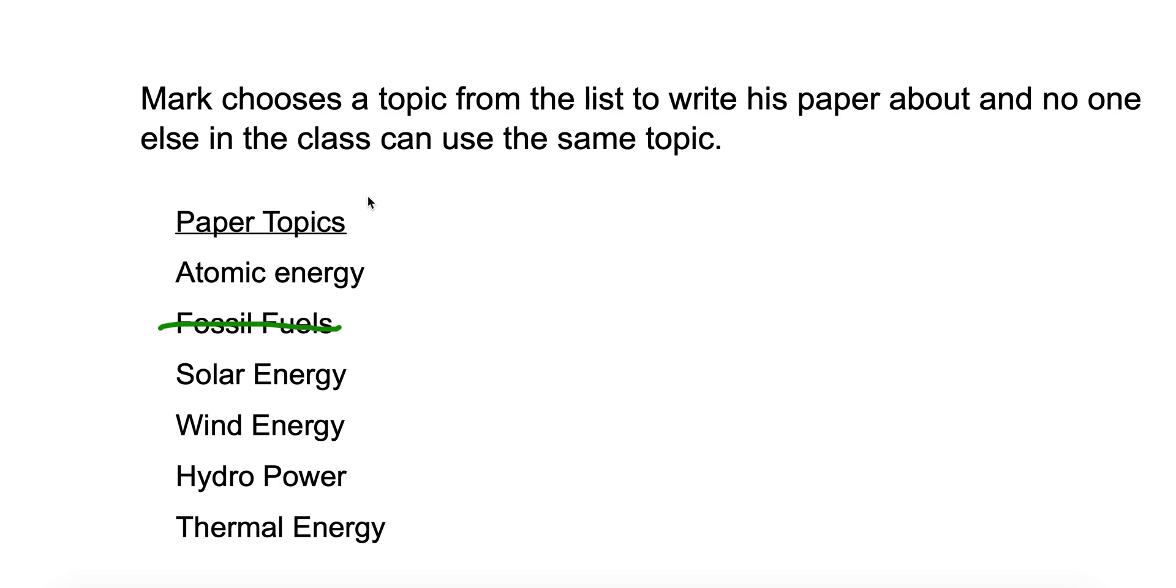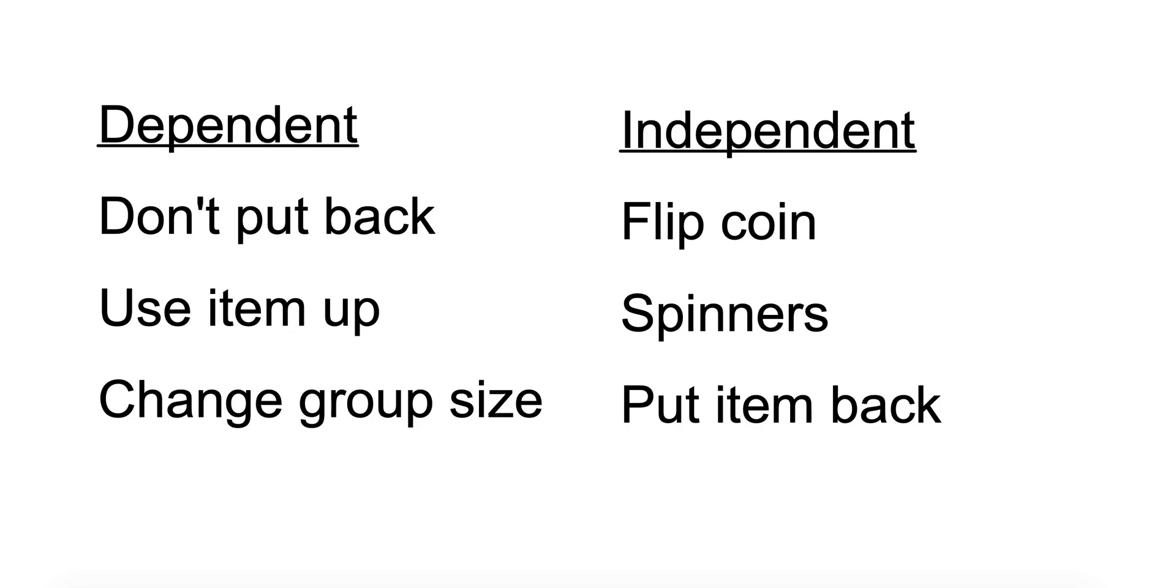If your probability doesn't depend on what the other people have done, that means it's independent. Here are some key things to look for. This isn't all possibilities but here are some key things. If it's dependent, basically if they don't put it back and replace it, or we call that with replacement.